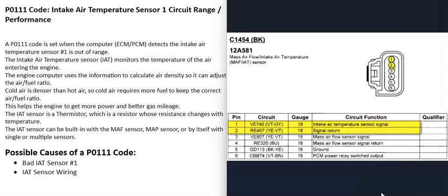It's very common for five volts to be going to these sensors, and as the resistance values change, the signal wire on the other side will have a different voltage going back to the computer. Be sure to get schematics for the vehicle so you know what's going on. Verify you have voltage going to the sensor and check the signal wire going back to the computer.